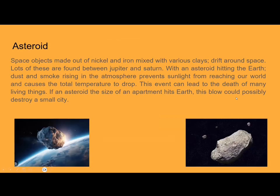They're similar in that they orbit the sun, but they're also different. More specifically, asteroids are space objects made out of nickel and iron mixed with various clays. They drift around space — lots of these are found between Jupiter and Saturn. When an asteroid hits the Earth, dust and smoke rising into the sunlight prevents sunlight from reaching our world and causes temperatures to drop.